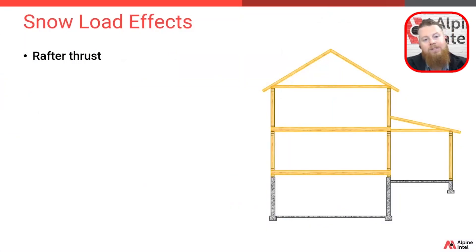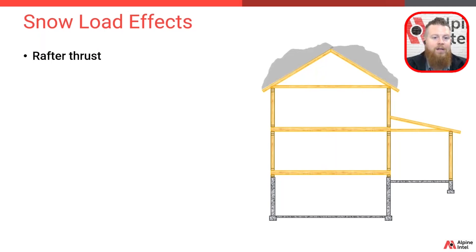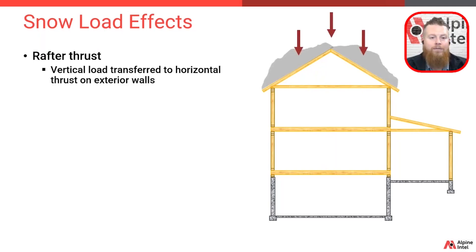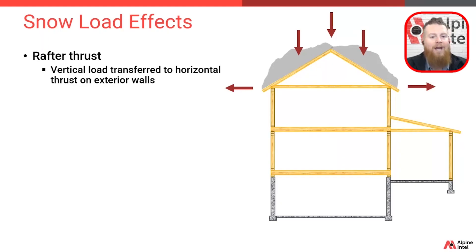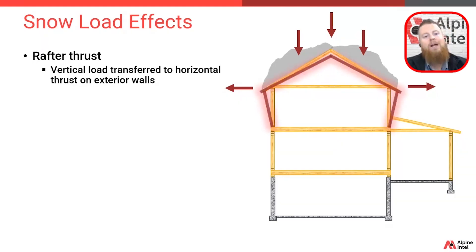Now, with heavy snows on the roof, one of the issues that can arise is something called a rafter thrust. This is when we have heavy static snow loads on the roof, and that weight has to get transferred down into the structure. And if that weight's too much, or if there's a design flaw, we can get something called outward thrust, and those rafters and those exterior walls start to bow down, and ultimately those walls push out.